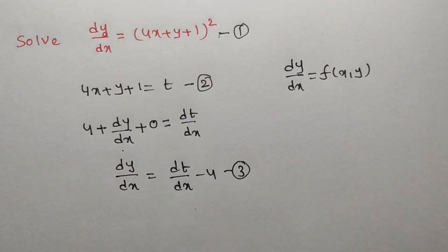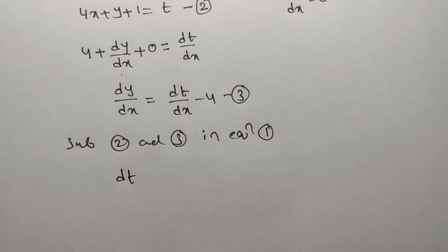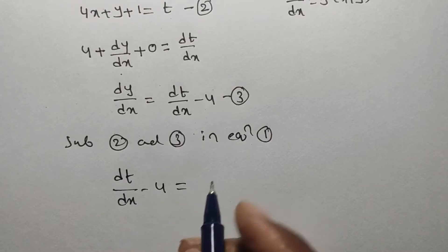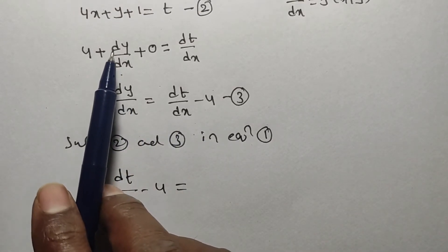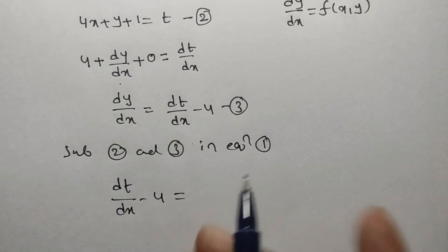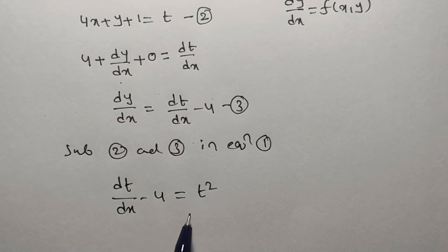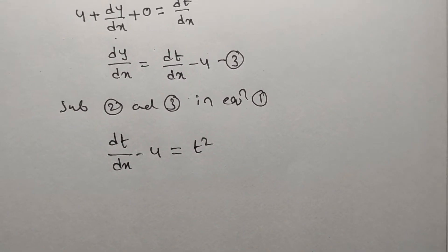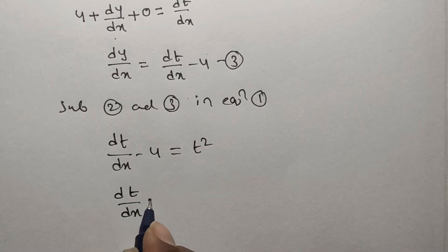Now substitute equations 2 and 3 into equation number 1. dy/dx becomes dt/dx − 4, and (4x + y + 1)² becomes t². So we have dt/dx − 4 = t², which gives dt/dx = t² + 4. This is again a first order and first degree equation, but now in terms of t.